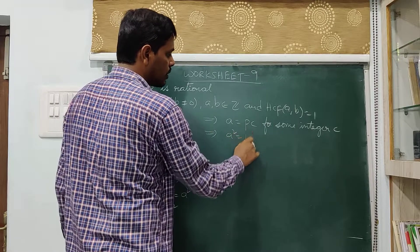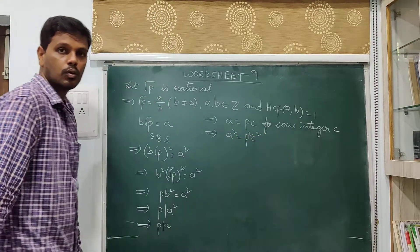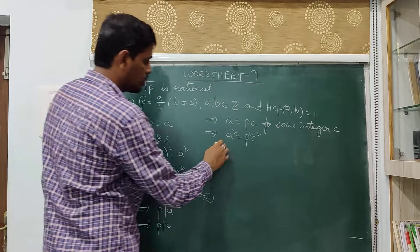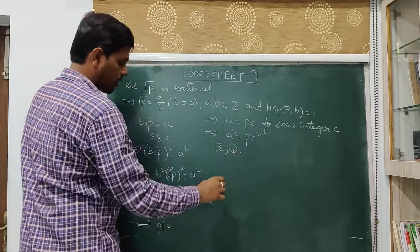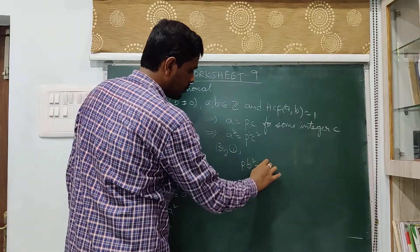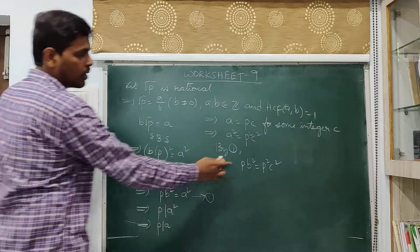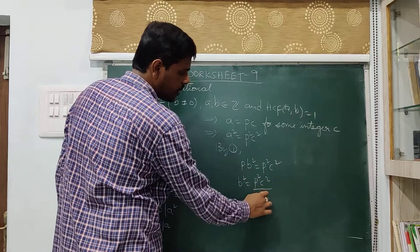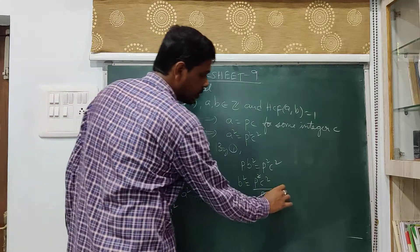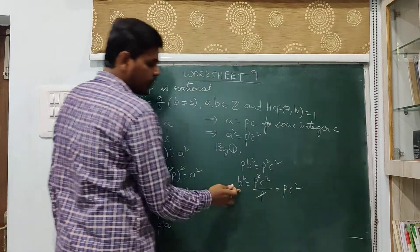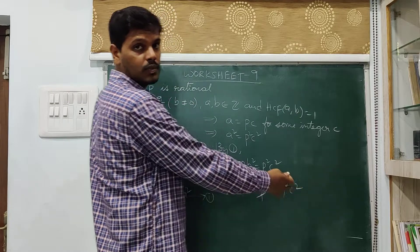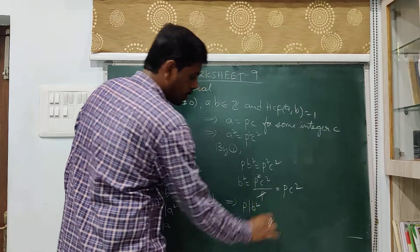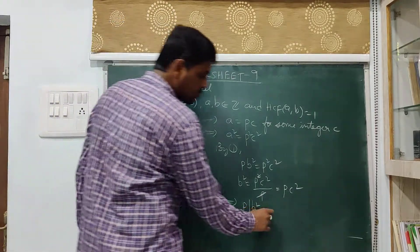By the definition of divisibility, if p divides a, there exists an integer c such that a equals p·c. Squaring gives a² equals p²·c². Substituting into the equation p·b² equals a², we get p·b² equals p²·c². Dividing both sides by p gives b² equals p·c². So b² is written as p times some integer, meaning p divides b².